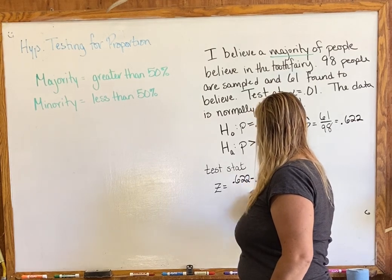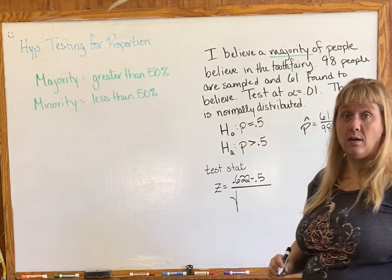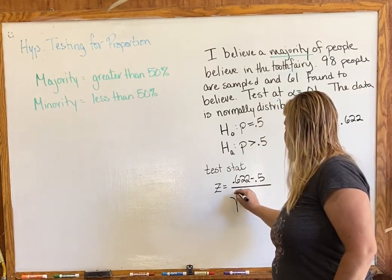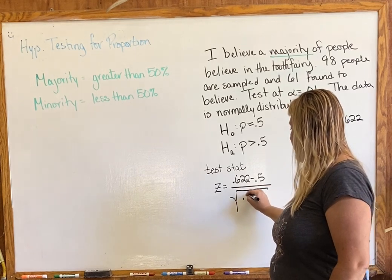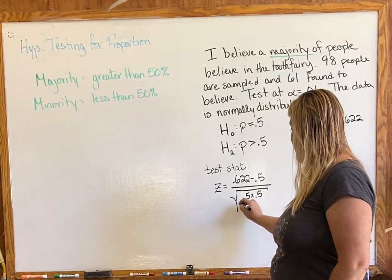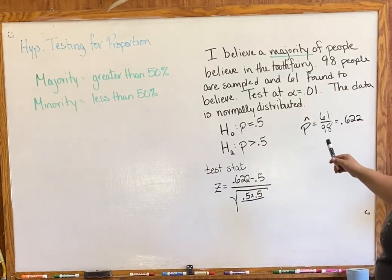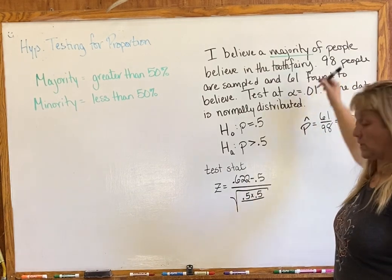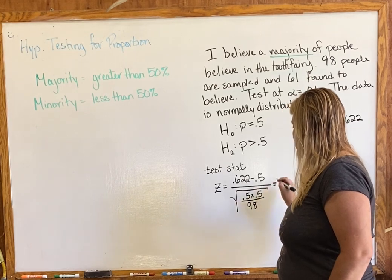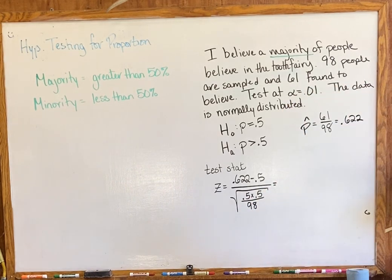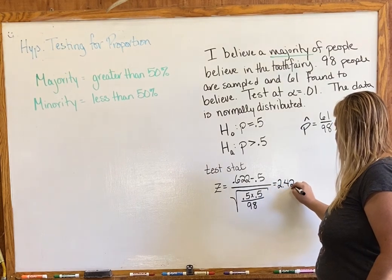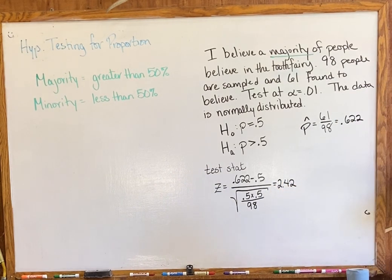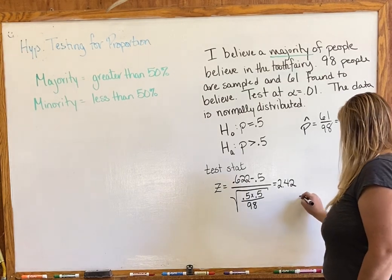Now we can find our Z-score. We start with p-hat of 0.622, subtract our p of 0.5, all over the square root of p times q — which is 0.5 times 0.5 — divided by our sample size of 98. Be careful: use the whole sample size, which is 98. Put that in your calculator and we get a Z-score of 2.42.